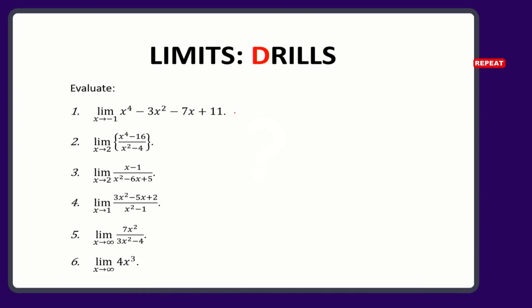For question number one, Abner gave us the answer. Because the function is linear, it's not divided by anything. All you simply do is take this value here, put it wherever there is x. So you should have negative 1 to the power 4 minus 3 multiplied by negative 1 to the power 2 minus 7 multiplied by negative 1 plus 11. If you do all your calculations right, your answer should be 16. That is very straightforward.